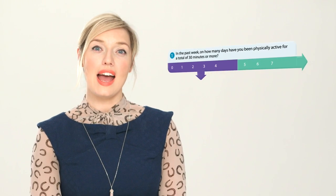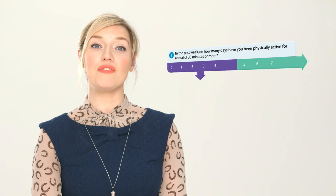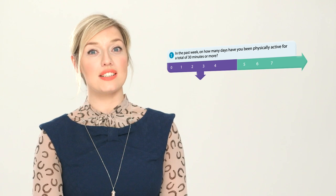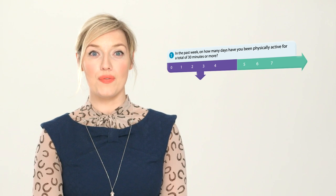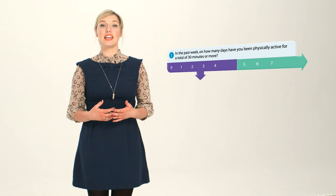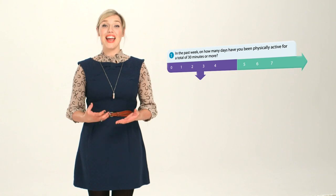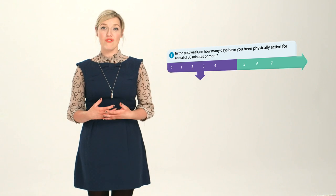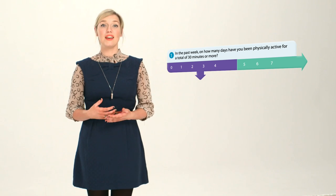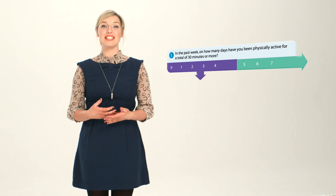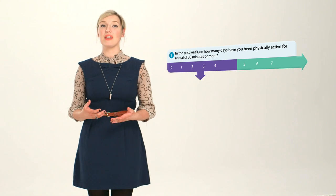Let's take a look at the first question in assessing a patient's level of physical activity. In the past week, how many days have you been physically active for a total of 30 minutes or more? Physical activity can include walking, cycling, gardening, housework and exercise or sport — anything that gets the heart rate or breathing rate up a little. Remember, the 30 minutes can be divided into bouts of 10 minutes or more.